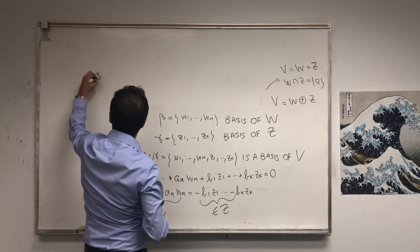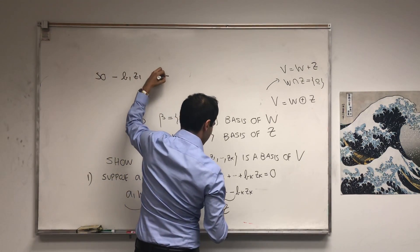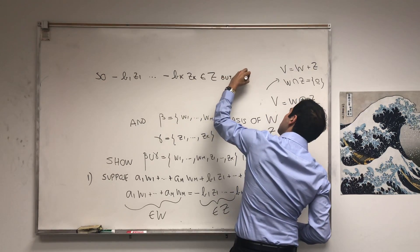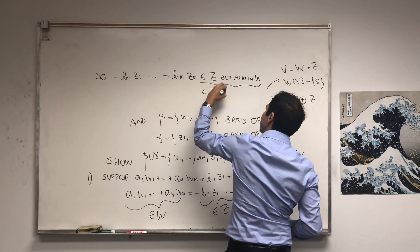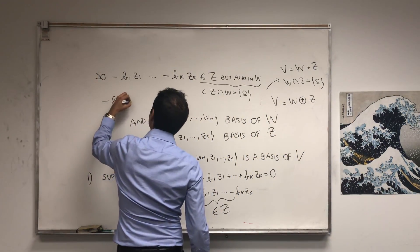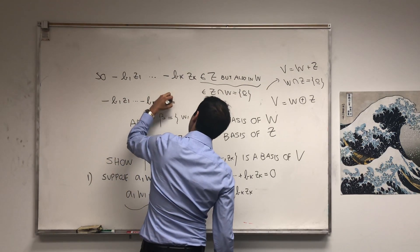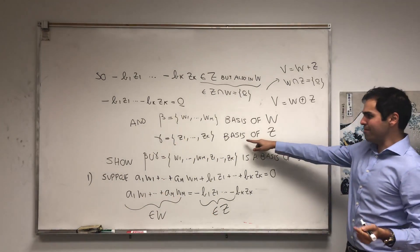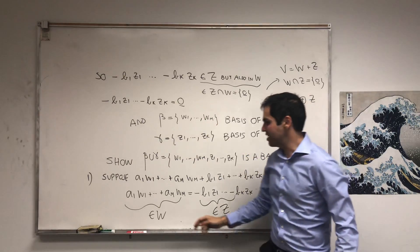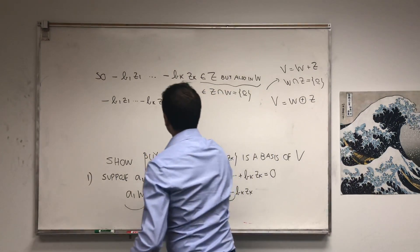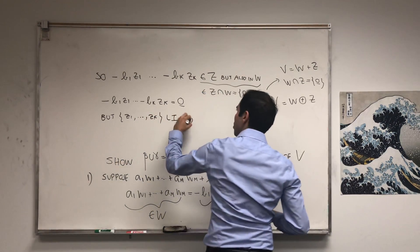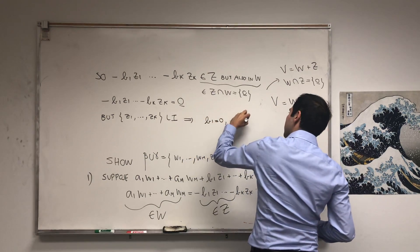So −B1·Z1 − ... − Bk·Zk is in Z and also in W, meaning it's in Z ∩ W. But this intersection is just the zero set, so the only way this works is if it's the zero vector. Therefore −B1·Z1 − ... − Bk·Zk = 0. But the Z_i's form a basis, so they're linearly independent, which gives us B1 = 0, ..., Bk = 0.